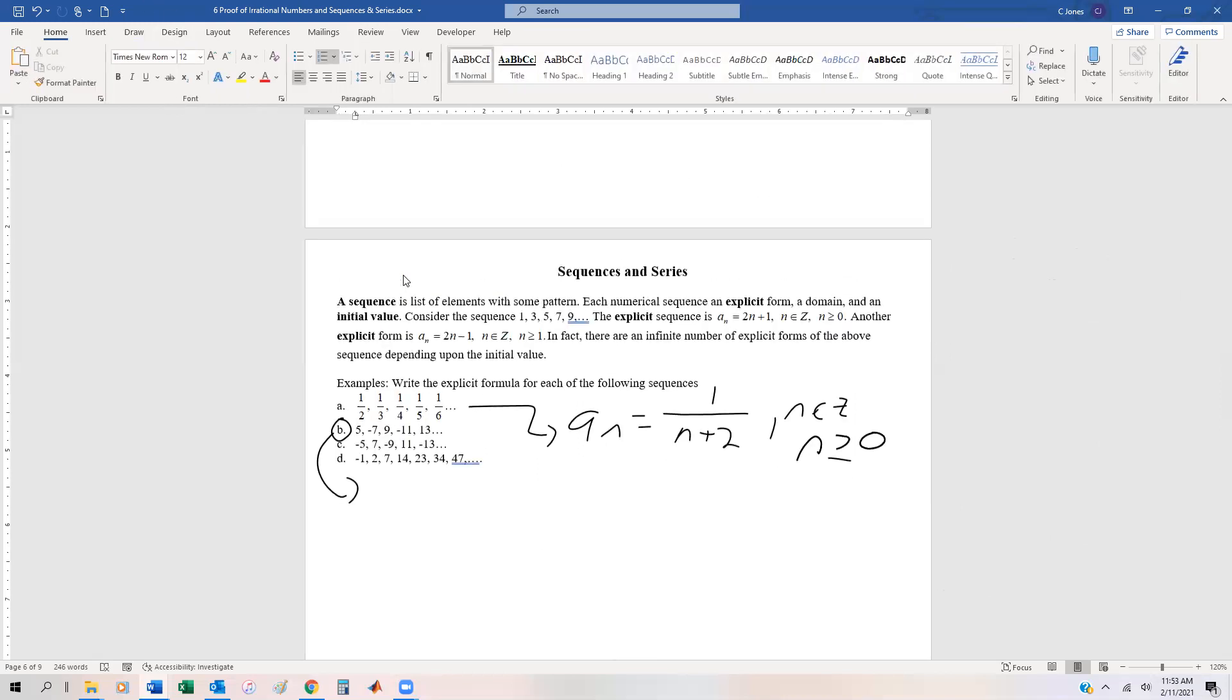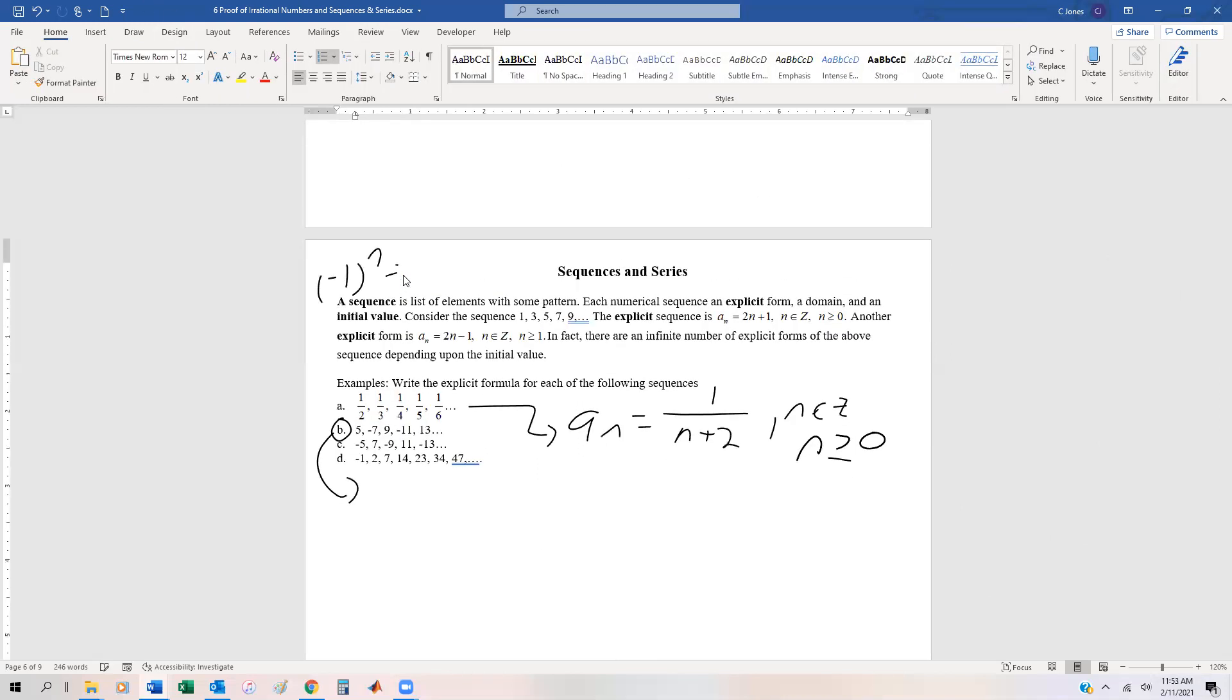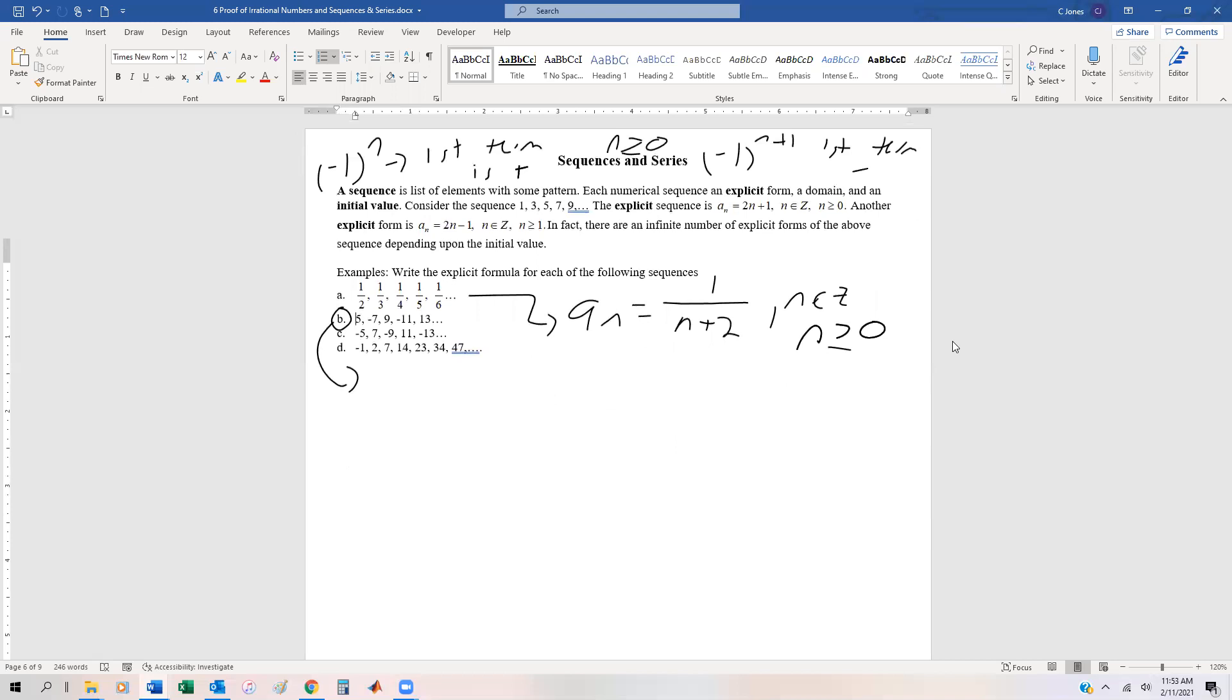And n is greater than or equal to 0. So those are your two alternating factors. In fact, what I'll do is I'll just write those up at the top now that we've gone through and given the description to those. So it's either minus 1 to the n or minus 1 to the n plus 1. So up top here, we have minus 1 to the n. And that's if the first term is positive and minus 1 to the n plus 1, first term negative. And again, those are for when n is greater than or equal to 0. If you change that initial value, then unfortunately, it might not produce what you want it to.